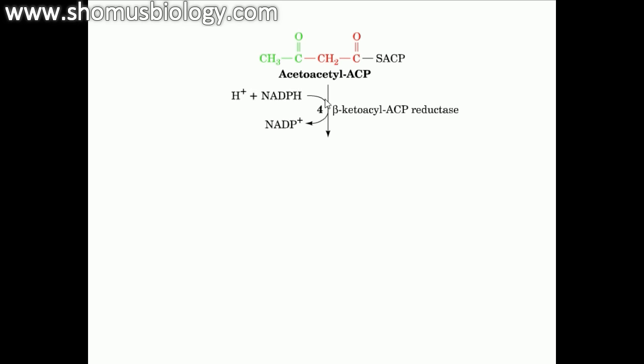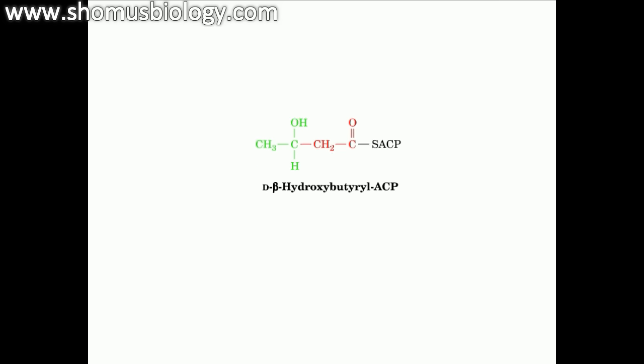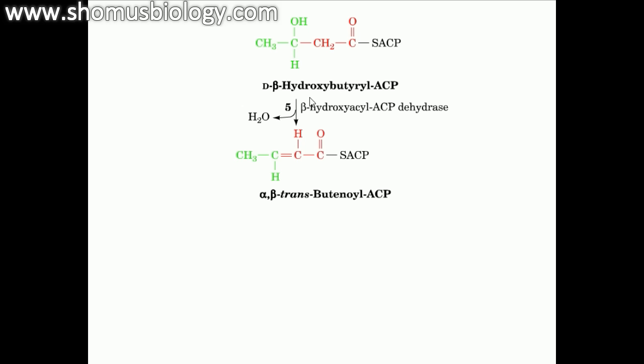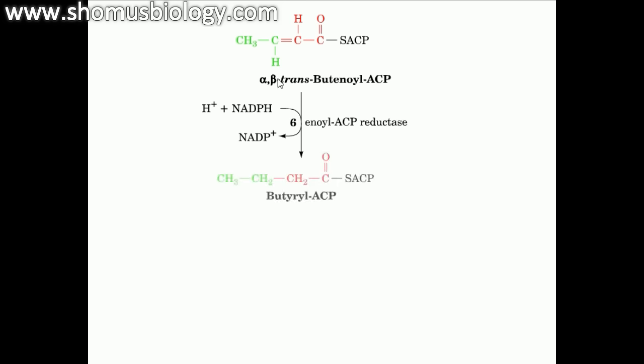In the NADPH-dependent reaction, this acetoacetyl-ACP is reduced to the D-beta-hydroxybutyryl-ACP by the beta-ketoacyl-ACP reductase enzyme. And then this D-beta-hydroxybutyryl-ACP is converted to the alpha-beta-trans-butenyl or butanoyl-ACP by the enzyme D-beta-hydroxybutyryl-ACP dehydratase which releases water. In an NADPH-dependent reaction later, this alpha-beta-trans-butenyl-ACP is converted to butyryl-ACP with the help of enoyl-ACP reductase enzyme which oxidizes NADPH and produces NADP+.